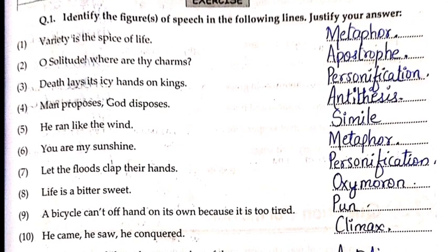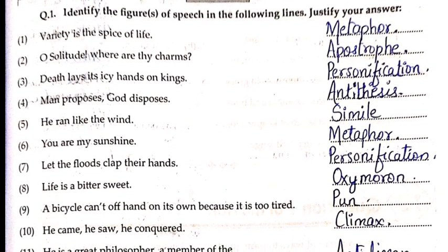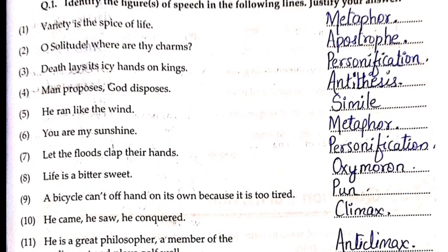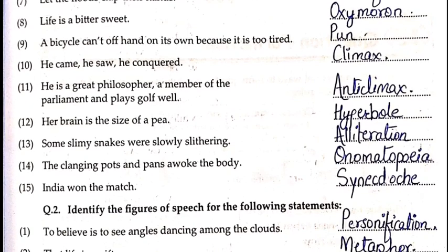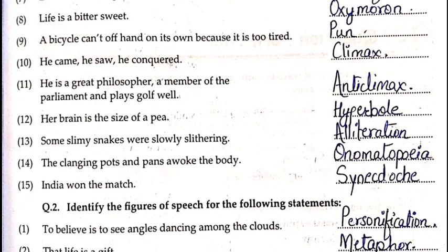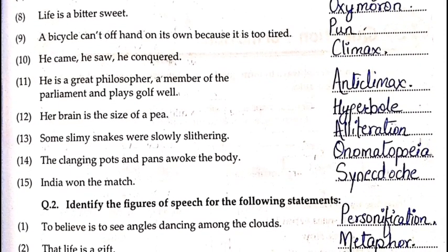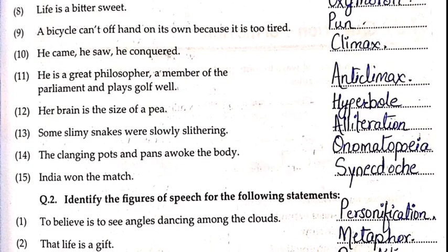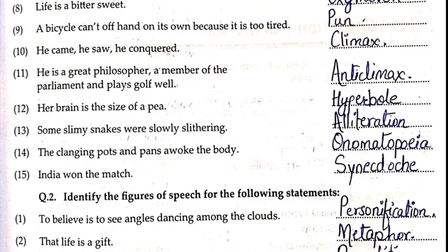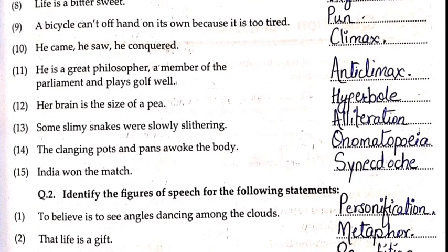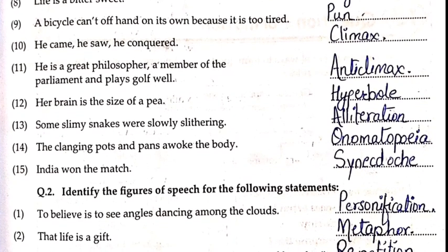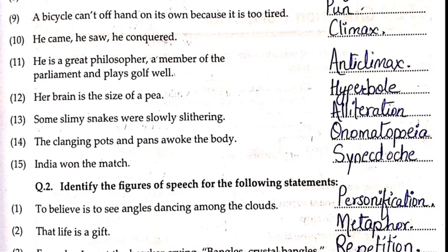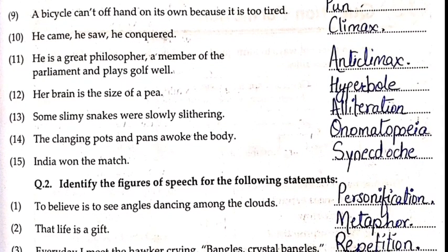Seventh: 'Let the floods clap their hands' — Personification. Eighth: 'Life is bitter-sweet' — Oxymoron. Ninth: 'A bicycle cannot stand on its own because it is too tired' — Pun. Tenth: 'He came, he saw, he conquered' — Climax. Eleventh: 'He is a great philosopher, a member of parliament, and plays golf well' — Anti-climax. Twelfth: 'Her brain is the size of a pea' — Hyperbole. Thirteenth: 'Some shiny snakes slowly slithered' — Alliteration (S sound repeated). Fourteenth: 'The clanging pots and pans awoke the baby' — Onomatopoeia. Fifteenth: 'India won the match' — Synecdoche.